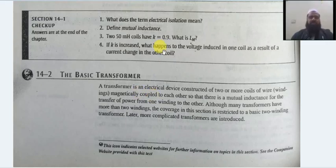The next topic is the basic transformer. A transformer is an electrical device constructed of two or more coils of wire. These coils are magnetically coupled - the magnetic field links them together, creating a conducting path for the magnetic field so they interact with each other. This creates mutual inductance.